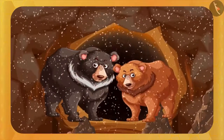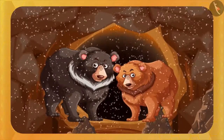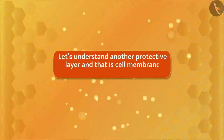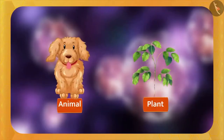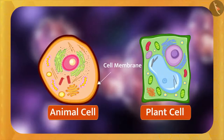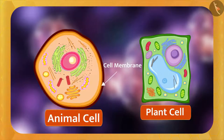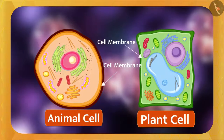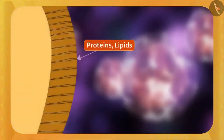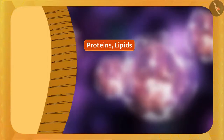But animals can go to a safe place. That is why they do not need any additional protection. Let's understand another protective layer — the cell membrane or plasma membrane. Cell membrane or plasma membrane is the outermost layer of the animal cell. It separates the parts of the cell from the external environment and it is present in both plant and animal cells. It is made up of proteins and lipids, which are very important biological molecules.